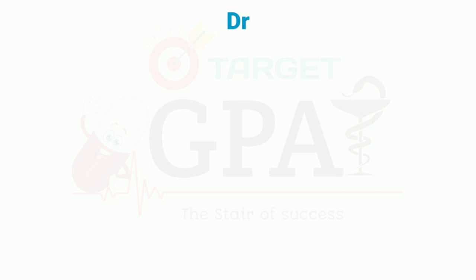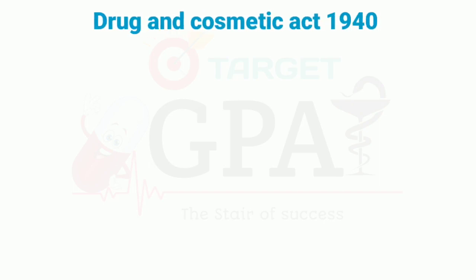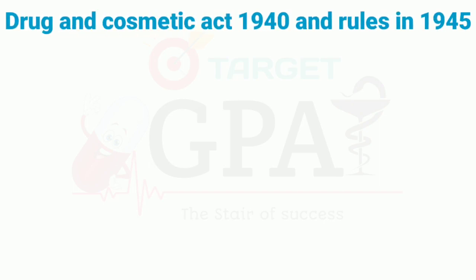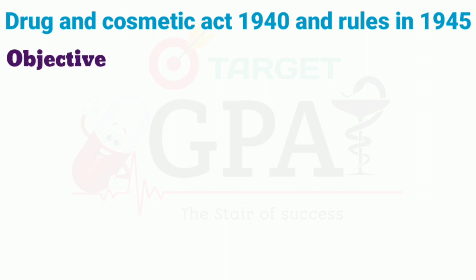The first act is the Drugs and Cosmetics Act. This act came in 1940 and its rules came in 1945. Now let's talk about the objectives of the Drugs and Cosmetics Act.